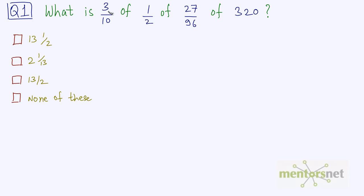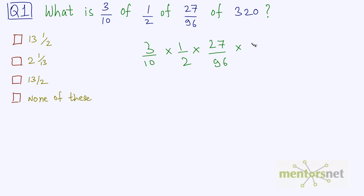What is 3/10 of 1/2 of 27/96 of 320? The meaning of this statement is 3/10 times 1/2 times 27/96 times 320. Now it is easy to cancel out terms in this expression.